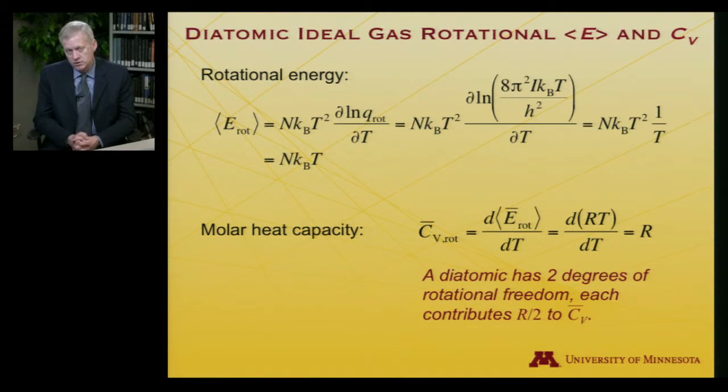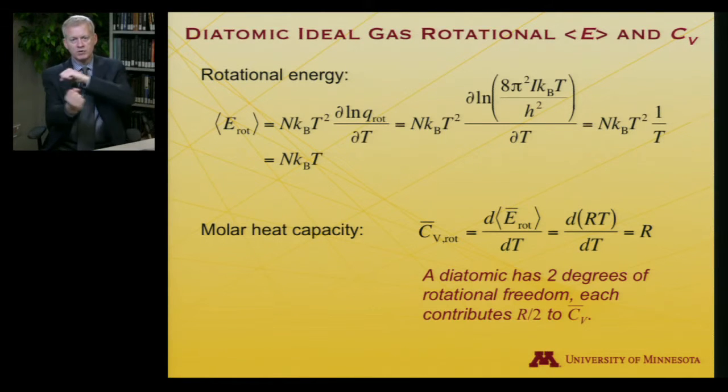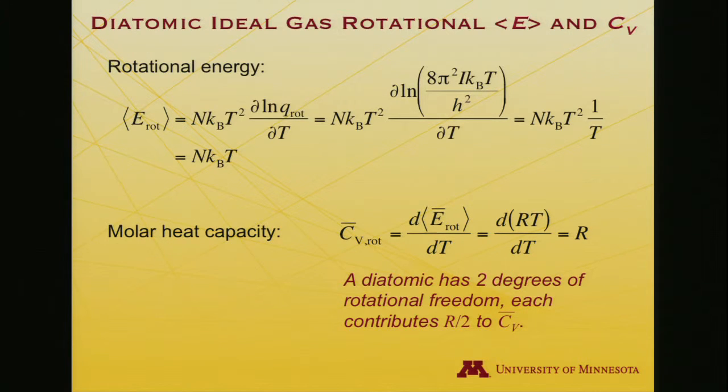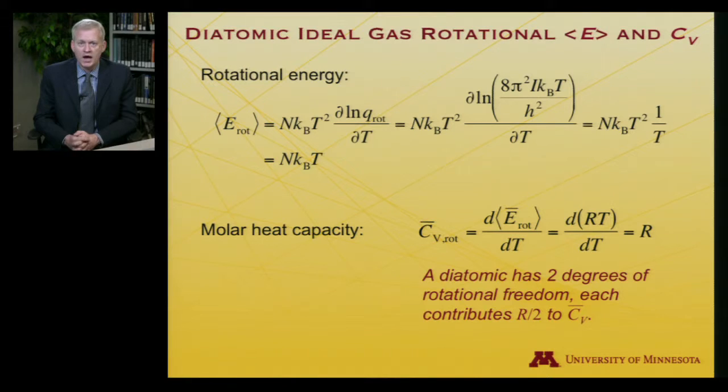A way to think of that: in the translational partition function, there was one-half R contribution to each of the translational degrees of freedom. There's an X, Y, and Z mode of translation, each contributing one-half R. For a diatomic, it can rotate in two directions. I can rotate like this, or end over end. If you think of the two ways that a diatomic can rotate that are unique, each of those contributes one-half R, and they add up to R. There is no rotation about its axis. That doesn't change anything. So two degrees of rotational freedom, each contributing R over 2, just as each degree of translational freedom contributes R over 2. Let's pause for a moment. I'll let you take a look at a self-assessment problem, and then we'll return.